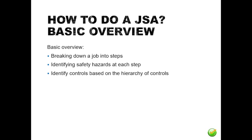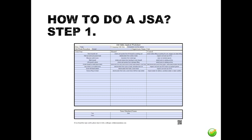Step one: select the job. The JSA should be completed by the supervisor and the people doing the work, as they are the people most familiar with the hazards. A safety professional may help identify hazards and controls, but the supervisor and employees performing the work are most qualified to complete the JSA.